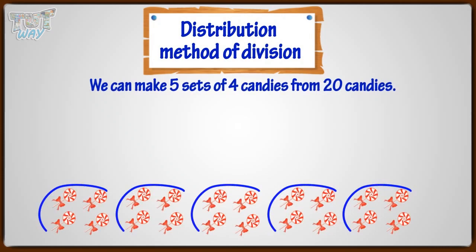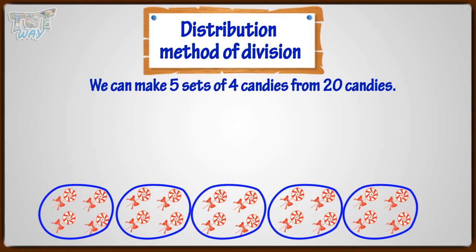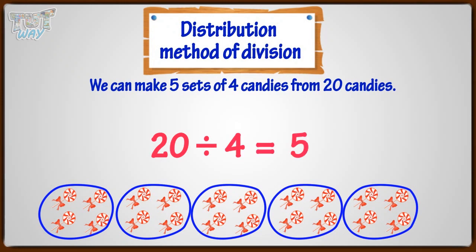We can make five sets of four candies from 20 candies. Or, four candies will be there in each set if we divide 20 into five groups. We say it as: 20 divided by 4 equals 5. Also, 20 divided by 5 equals 4.